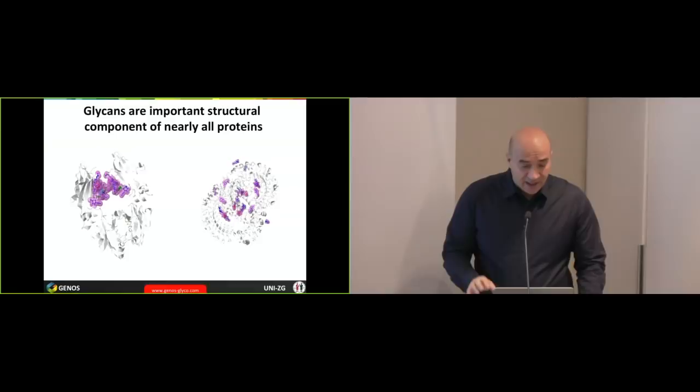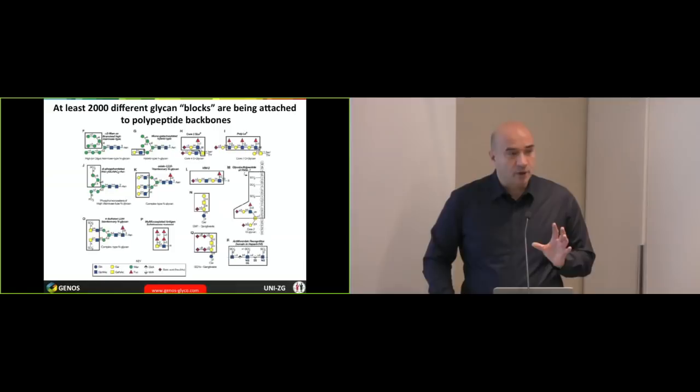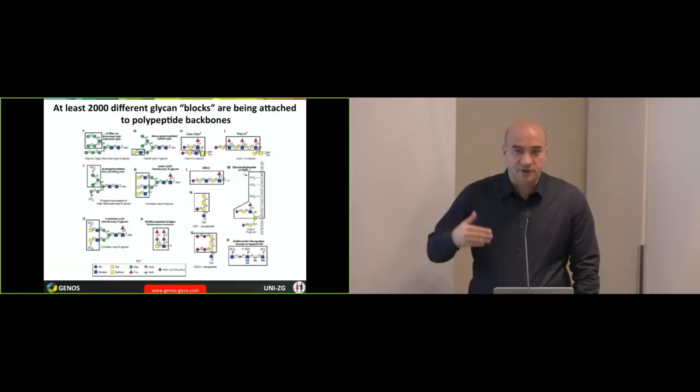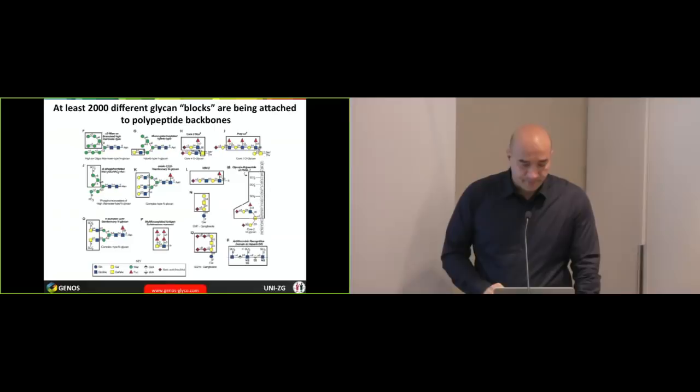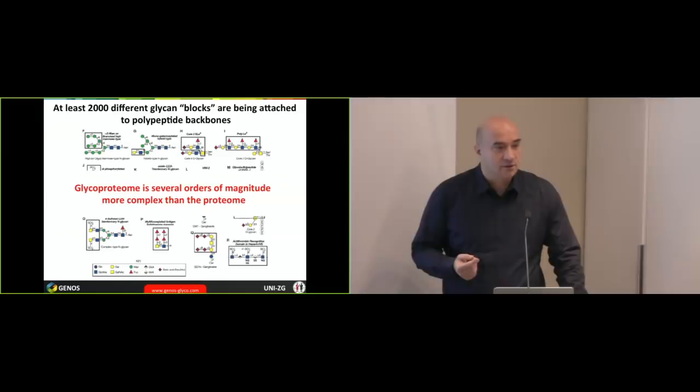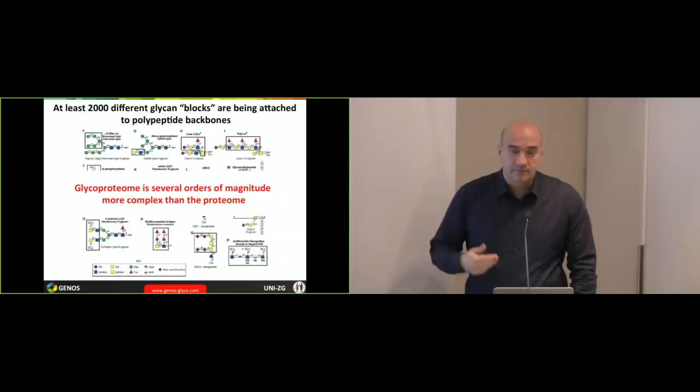And if we put a different glycan, for example, here, this will be a different molecule with different structural and functional properties. And this is very complicated. There are over 2,000 different glycan blocks which can be attached to a polypeptide backbone. So if you think about the genes where we have only four nucleotides, then we have 20 amino acids, then we have thousands of glycan blocks which modify the protein. And actually, the glycoprotein is several orders of magnitude more complex than the protein. If you talk about approximately 20,000 genes, maybe 100,000 proteins, we are talking about tens or hundreds of millions of different glycoproteins. And this is why people tend to stay away from this topic, just because it's very difficult and very complicated.